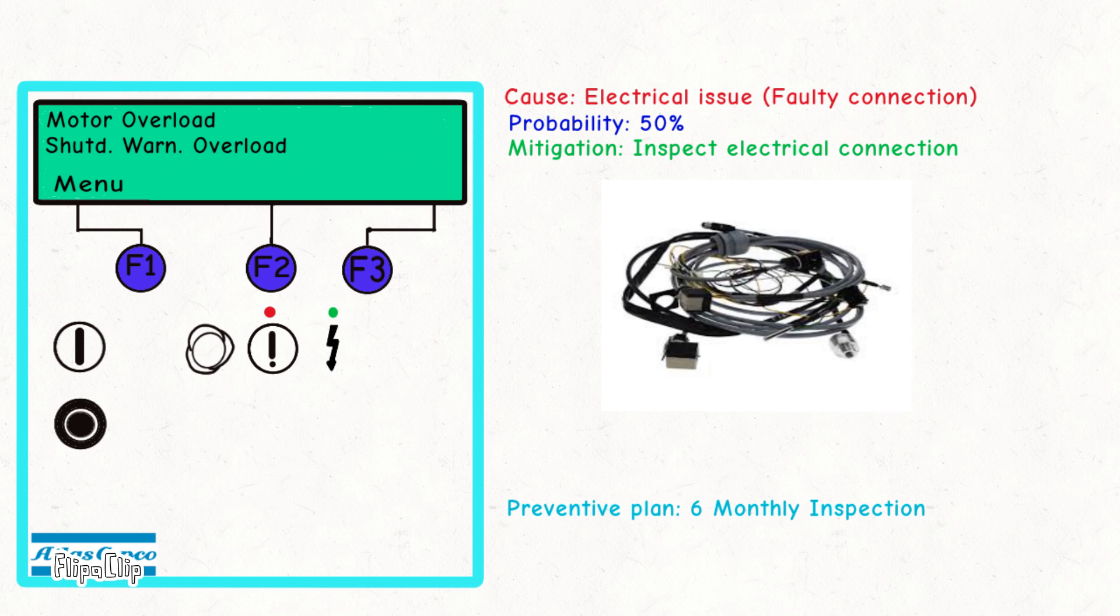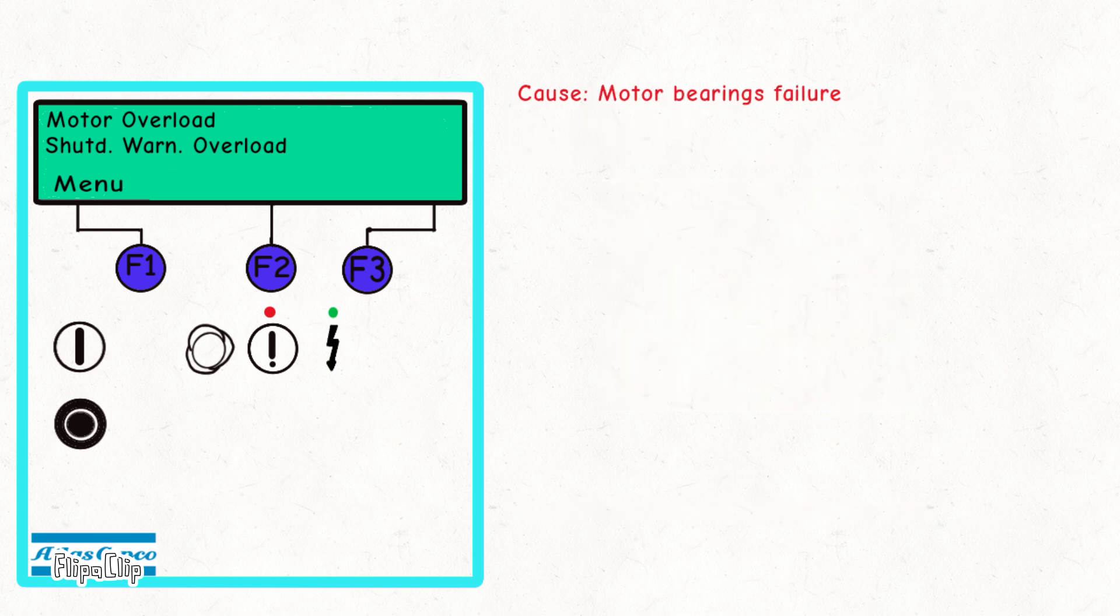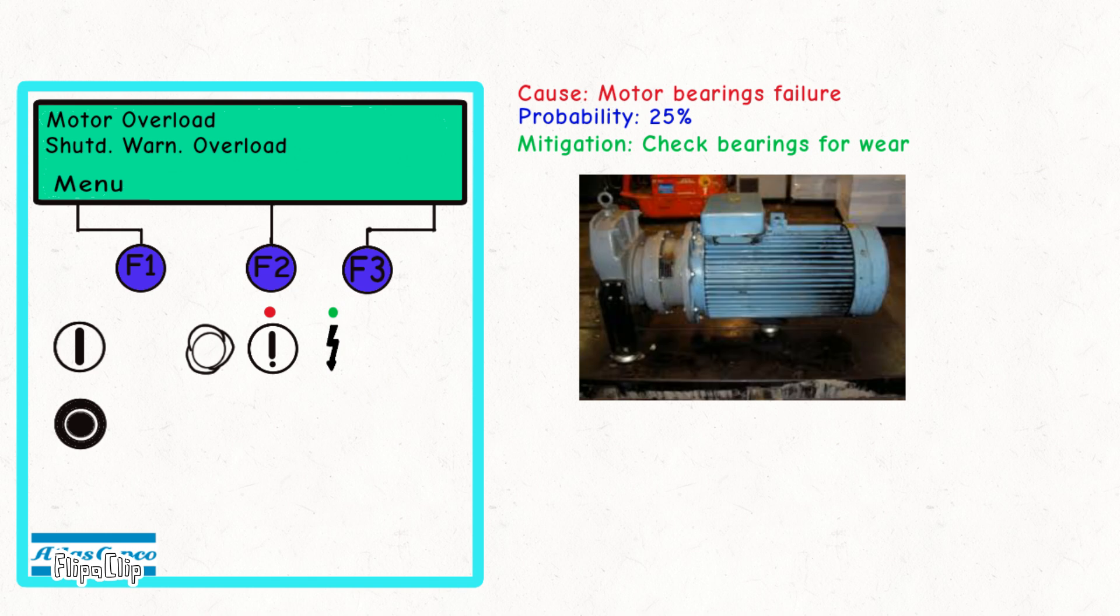The second cause is motor bearing failure, with a probability of 25%. Check the motor bearings and ensure they are properly lubricated. Perform a yearly inspection of the bearings and lubrication system. Bearing failure can lead to increased friction and motor overload. Proper lubrication and annual inspections are essential to maintain bearing health.